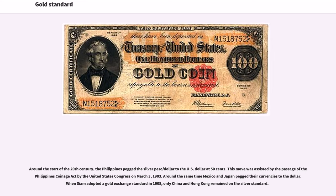Around the start of the 20th century, the Philippines pegged the silver peso/dollar to the U.S. dollar at 50 cents, assisted by the passage of the Philippines Coinage Act by the United States Congress on March 3, 1903. Around the same time, Mexico and Japan pegged their currencies to the dollar. When Siam adopted a gold exchange standard in 1908, only China and Hong Kong remained on the silver standard.